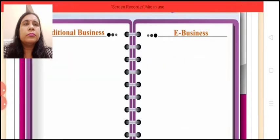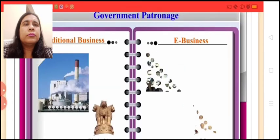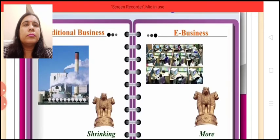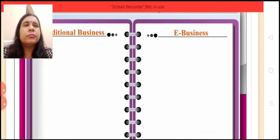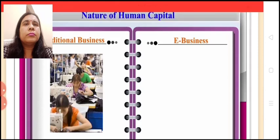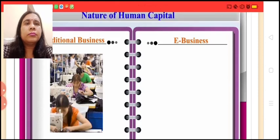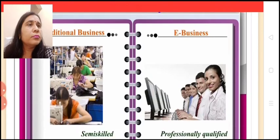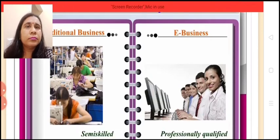Government patronage: Government concerns are more for e-business rather than for traditional business, as IT forms the top most priority of the government. Nature of human capital: Traditional business requires semi-skilled and unskilled manpower whereas e-business requires technically and professionally qualified personnel.